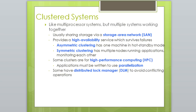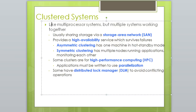A cluster system is like a multi-processing system with multiple systems working together, usually sharing storage via a storage area network, providing high availability. Asymmetric clustering has one machine in hot standby mode, while symmetric clustering has multiple nodes running applications and monitoring each other.